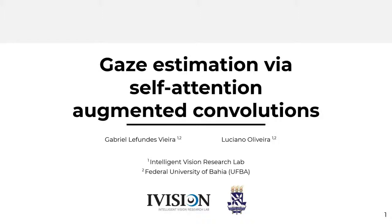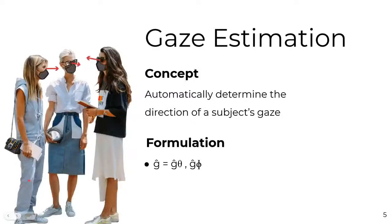Our main goal was to explore if the recent trend of self-attention mechanisms could be applied successfully to gaze estimation. Conceptually, gaze estimation is the task of determining the direction of a subject's gaze, or their visual attention. This is achieved by obtaining a gaze vector g-hat whose origin is the middle point between the eyes, and whose direction is described by the pitch and yaw angle components.